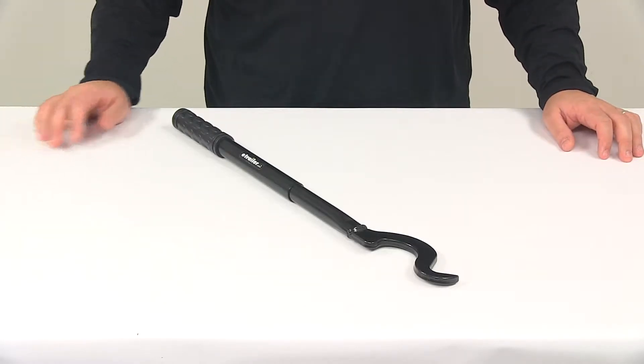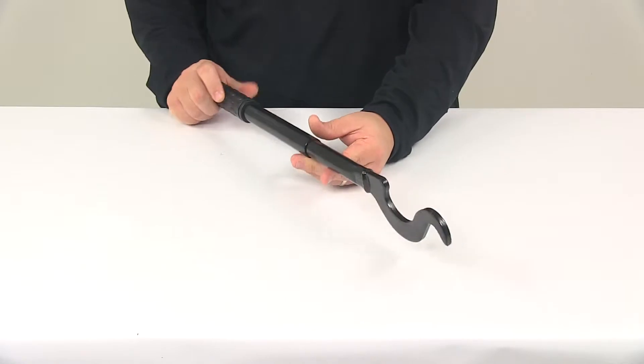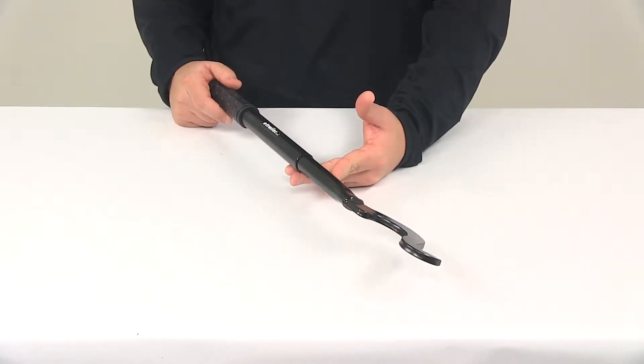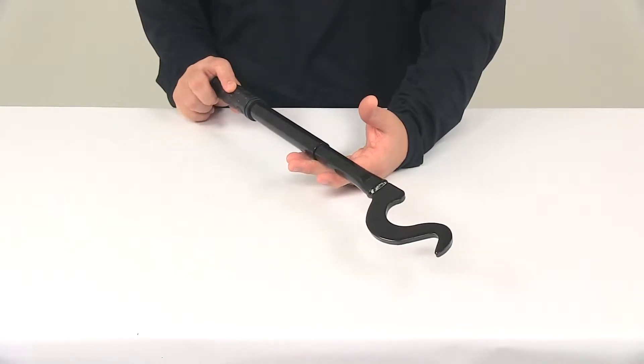Today we're going to be taking a look at the replacement snap-up lever for the equalizer weight distribution systems. You can use this replacement hook and handle combination to make hooking up your equalizer weight distribution system much easier.